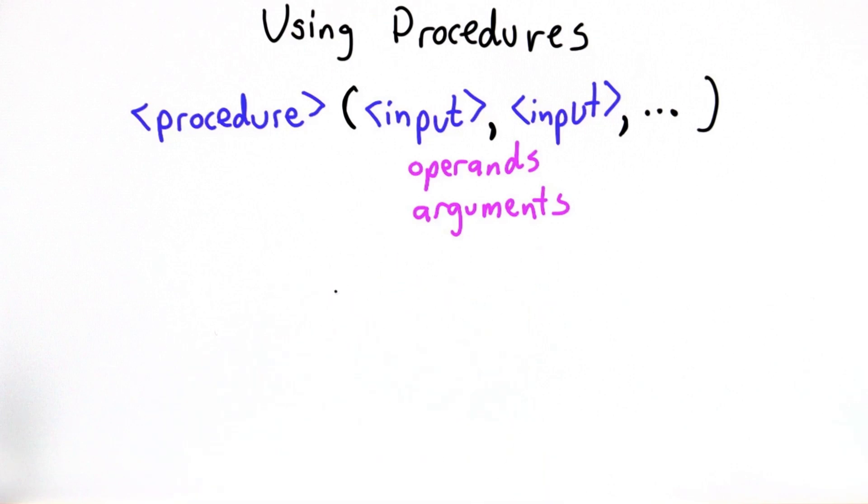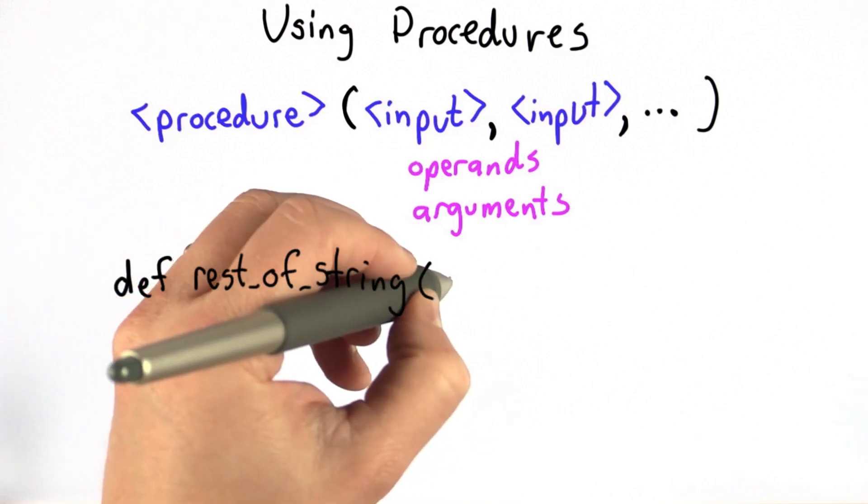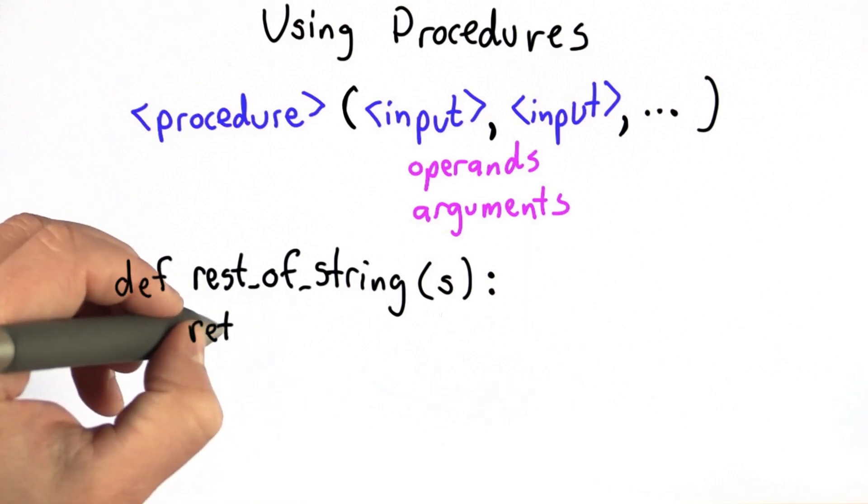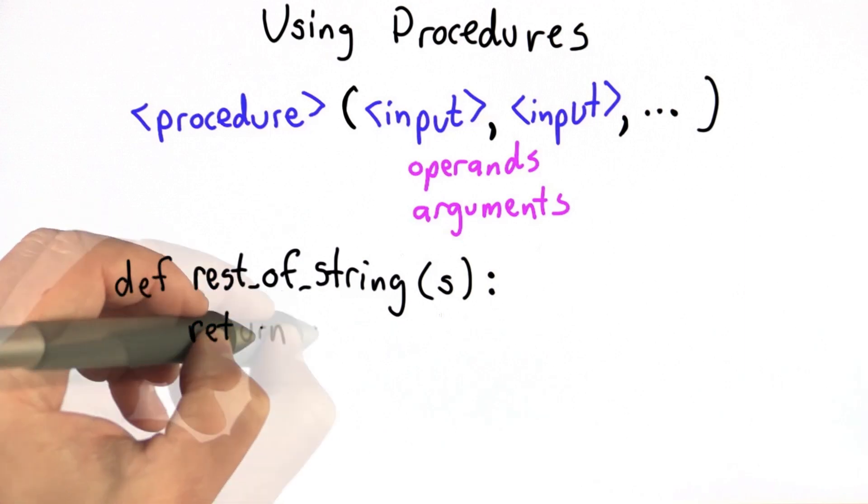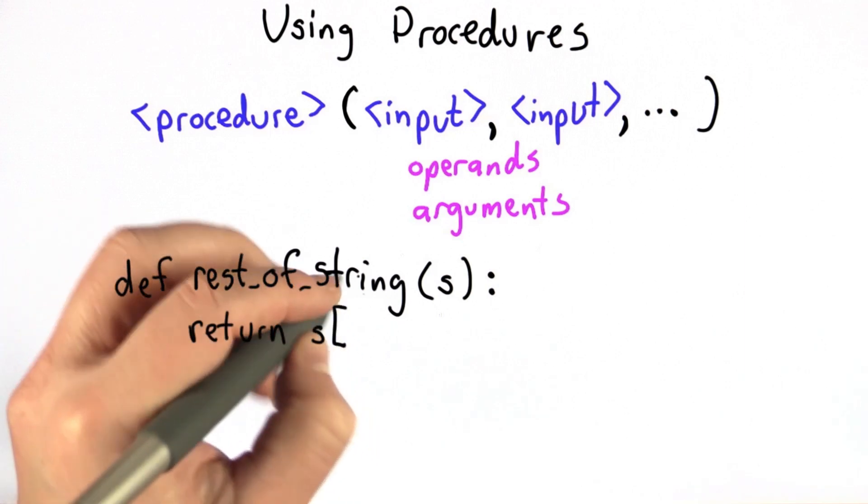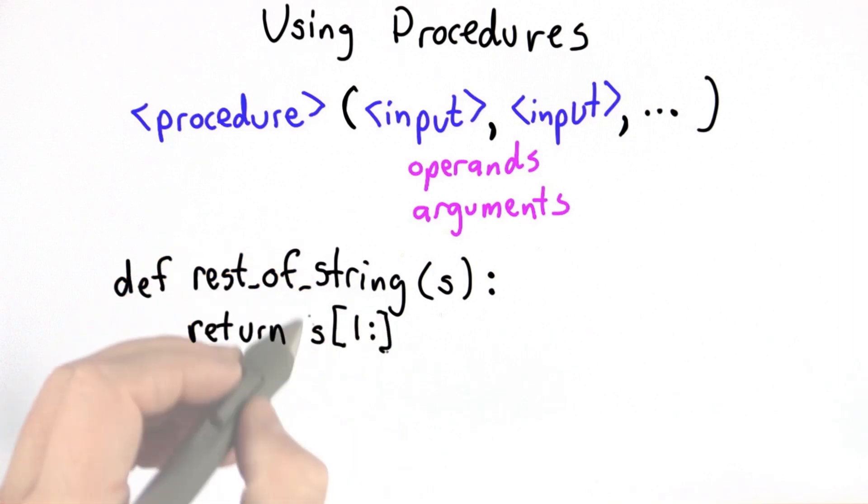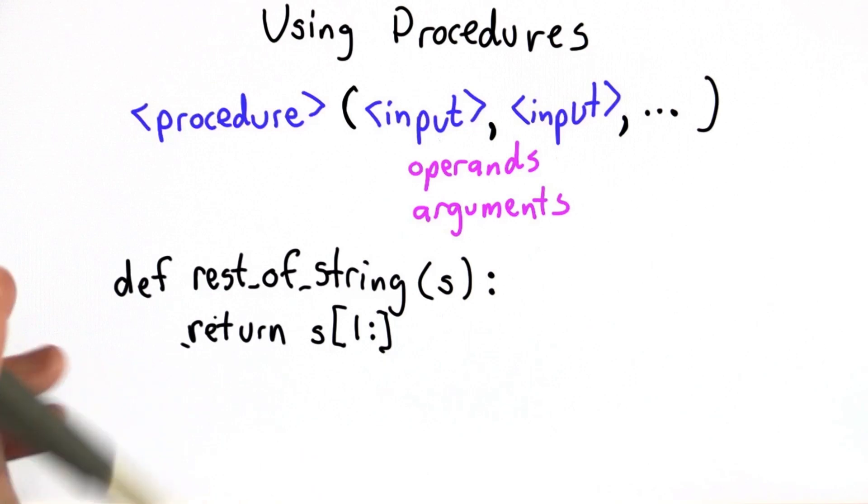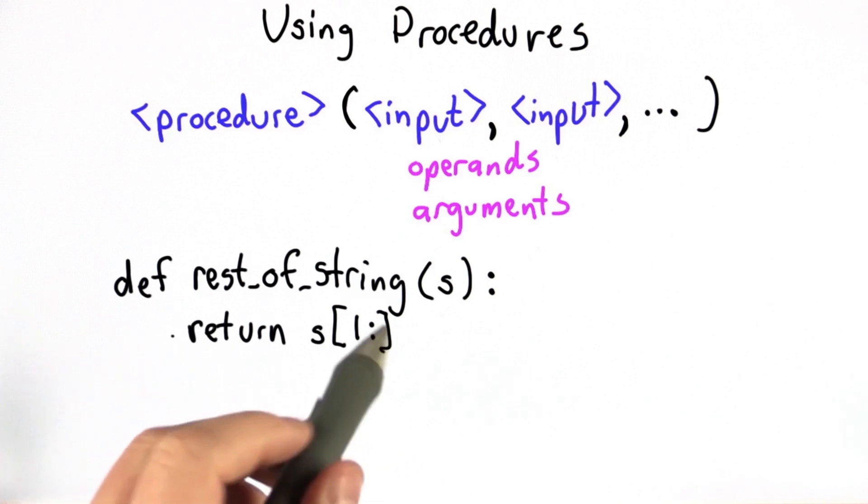So let's see how that works with a simple procedure. I'm going to define the procedure rest_of_string, and we'll give it the parameter s. So that means it takes one input, and we're going to use the name s to refer to the value of that input. And we'll make it return the string from the first character to the end. So we'll use the string indexing operator, return s[1:]. This will evaluate to the string with the first letter removed. So all strings from position 1 until the end of the string. And that's what we return. So that's the output of rest_of_string, that new string that starts from the second letter in the input string.